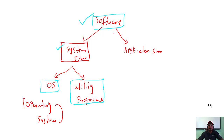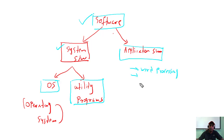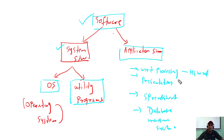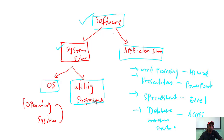Application software is software specifically used for certain tasks. The categories include: word processing, presentations, spreadsheets, and database management systems. For example, in a Windows environment: MS Word for word processing, PowerPoint for presentations, Excel for spreadsheets, and Access for databases.